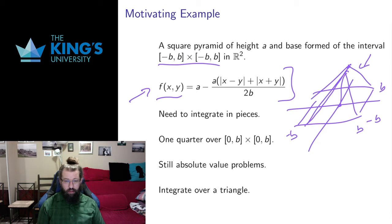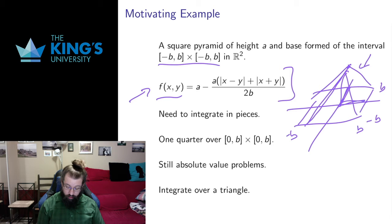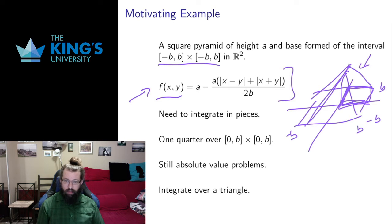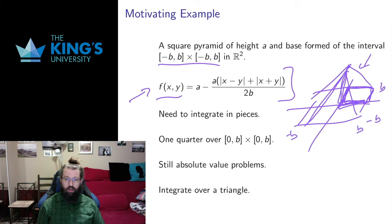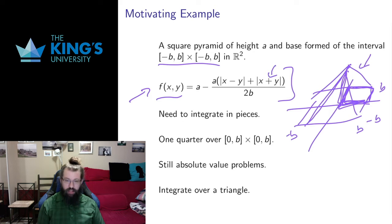The absolute values here are an issue because I can't integrate those directly. I need to integrate this in pieces where these absolute values work out. So what I'm going to do first is look at just a quarter of this. Taking a quarter and multiplying by 4 — since this pyramid is completely symmetrical — the volume over this quarter will be exactly one quarter of the whole pyramid. So I can work with positive x and y, and that means I can drop this absolute value.